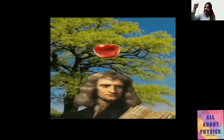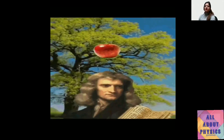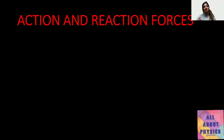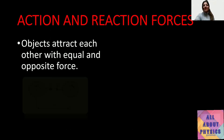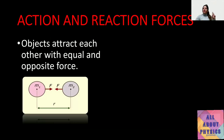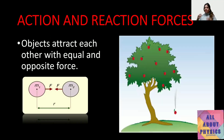We know that when one object exerts a force on another, the second object exerts an equal and opposite force on the first — these are action and reaction forces. We read about Newton's third law of motion in the previous chapter: to every action there is always an equal and opposite reaction. So if we consider two objects of masses m1 and m2 at a distance apart, if m1 exerts a force on m2, then m2 will exert the same force back on m1.